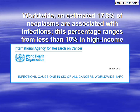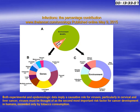The International Agency for Research on Cancer, in May 2012, announced that worldwide an estimated 17.8% of new cases are attributed to infections, and this percentage ranges to less than 10% in developed or high-income countries. A publication in the Lancet Journal of Oncology in May 2015 announced that the contribution of infections in cancer ranges from 15% to 20%. Viruses must be viewed as the second most common risk factor for cancer development in humans, exceeded only by tobacco consumption.